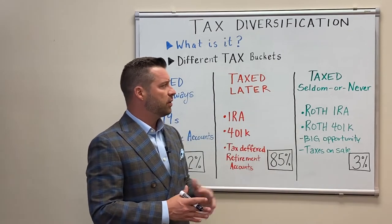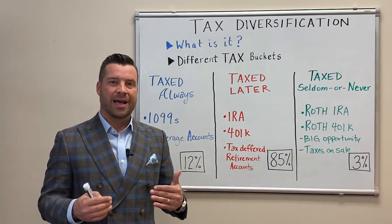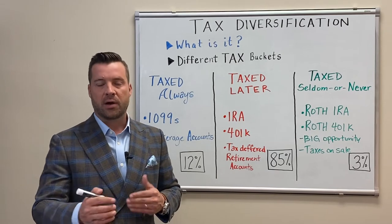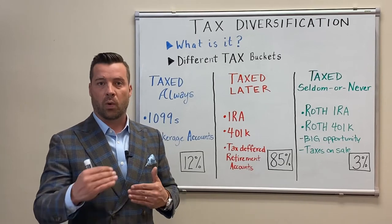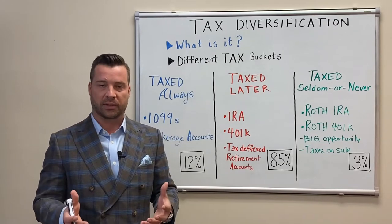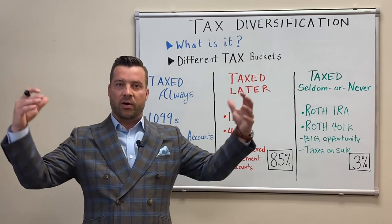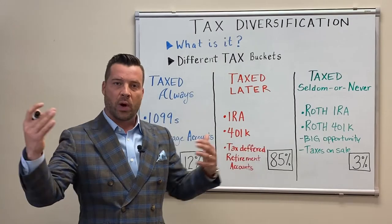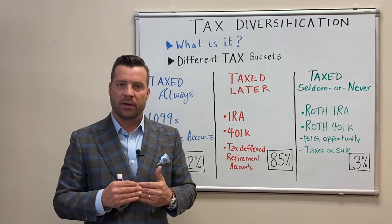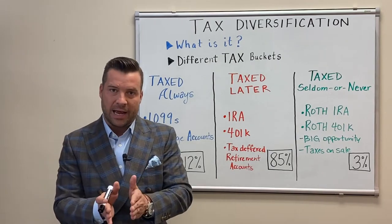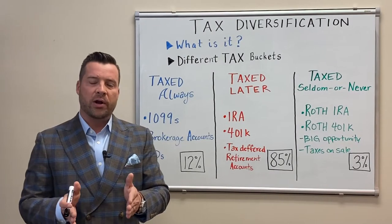The one that gets overlooked the most is what we call 'taxed seldom,' 'taxed never,' or maybe even better — 'tax-free.' These are going to be things like Roth IRAs and Roth 401ks, where you pay tax on the money today, and as the money grows over time, when you go to pull the money out, all of it is tax-free to you and your family. You pay today to save later.